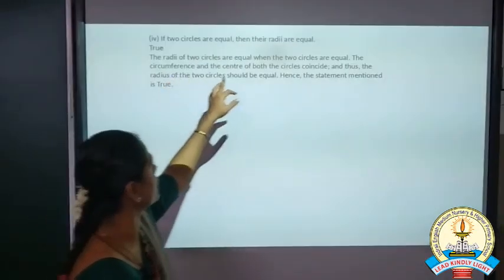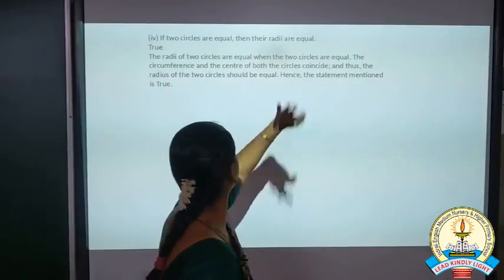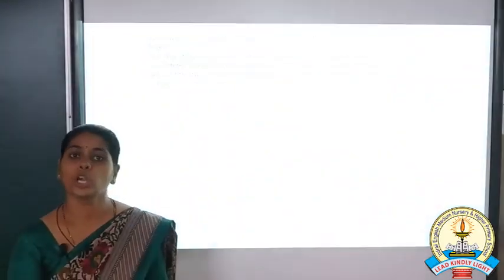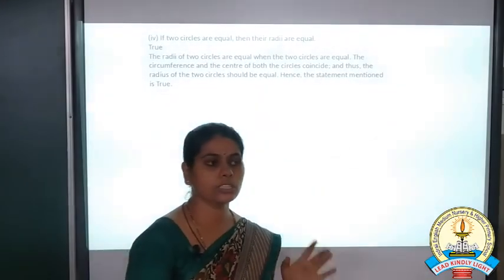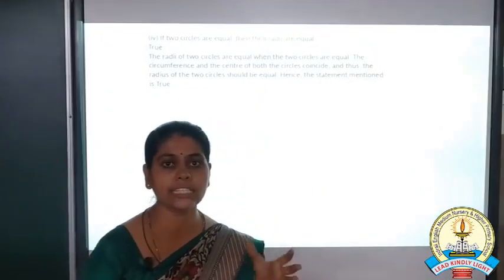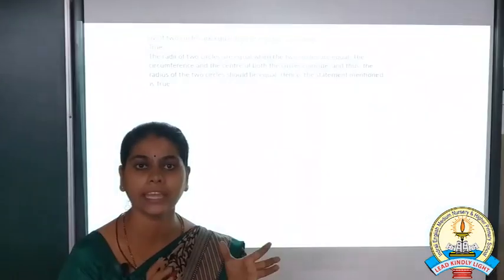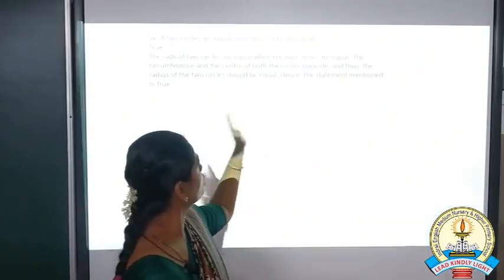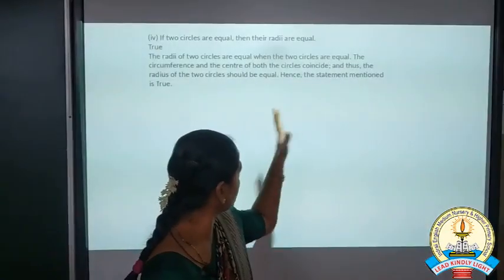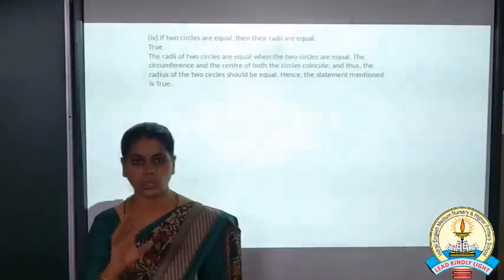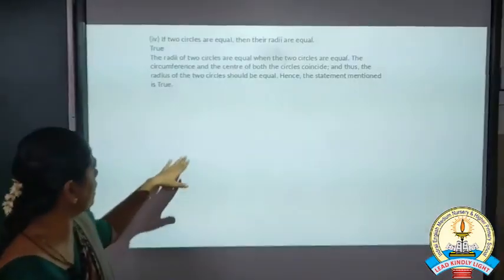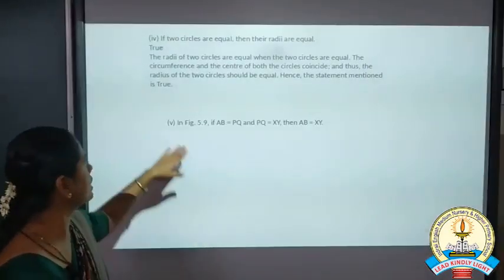If two circles are equal, then their radius is equal. The statement is true. Why? Because two circles coinciding with each other means the radius must be equal. So if they have equal radii then the two circles are equal.